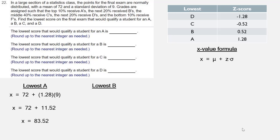For the lowest B, now the Z-score is 0.52. We multiply and add, and we get 76.68.